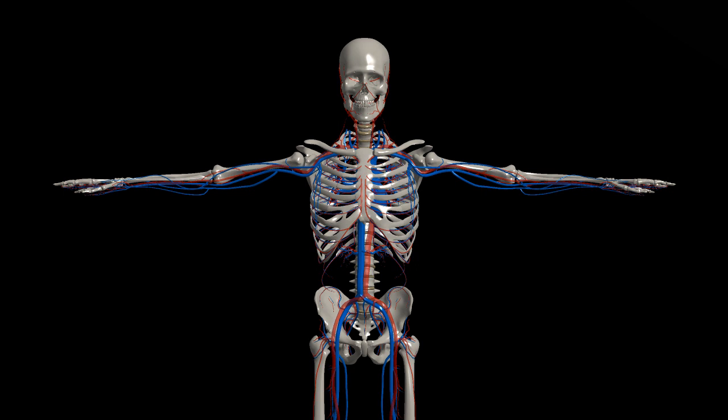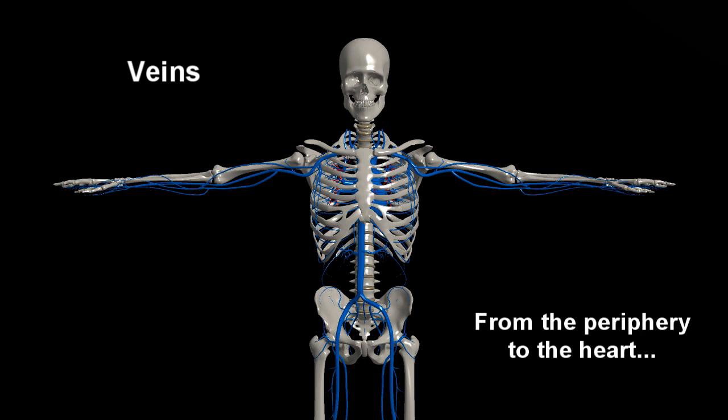The veins on the other hand are the blue vessels on a graphic picture of the circulatory system. The veins are designed to bring the deoxygenated blood from the periphery back to the heart for reoxygenation.